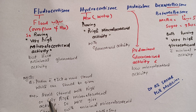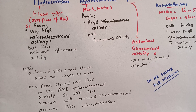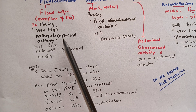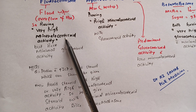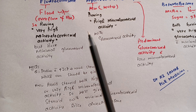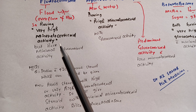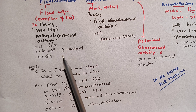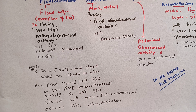What does mineralocorticoid activity and glucocorticoid activity mean? Mineralocorticoid activity is similar to aldosterone, which means there will be fluid retention with that steroid. Glucocorticoid activity means the steroid will increase the glucose level.